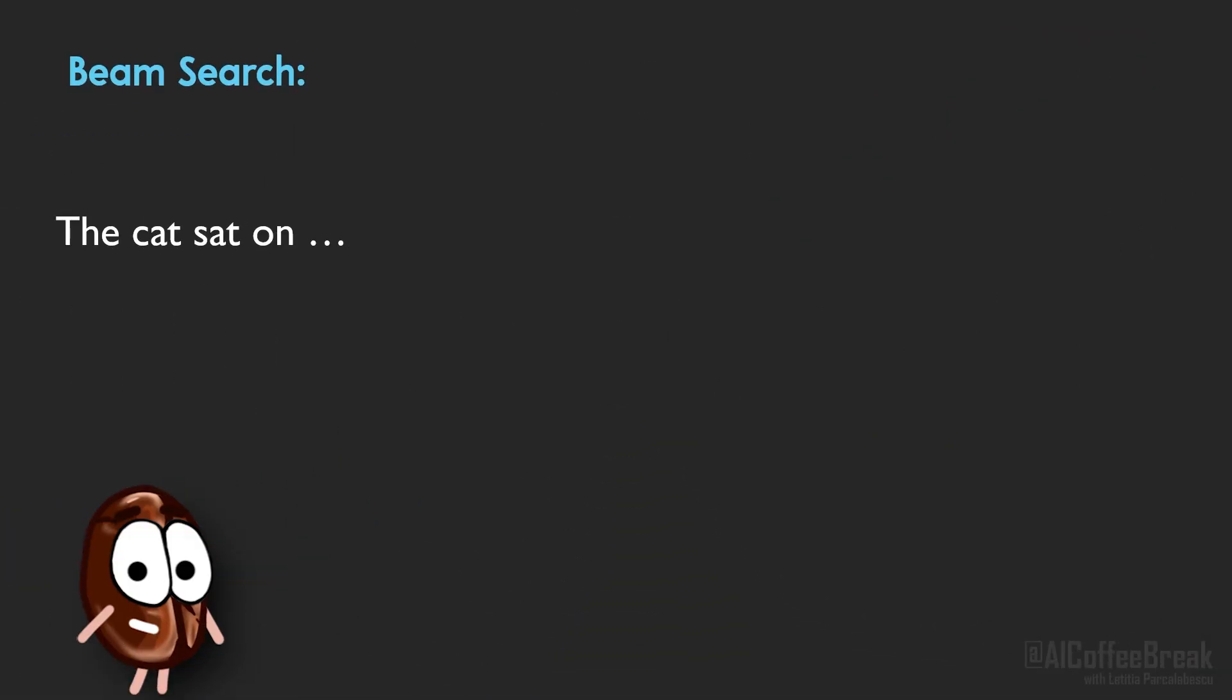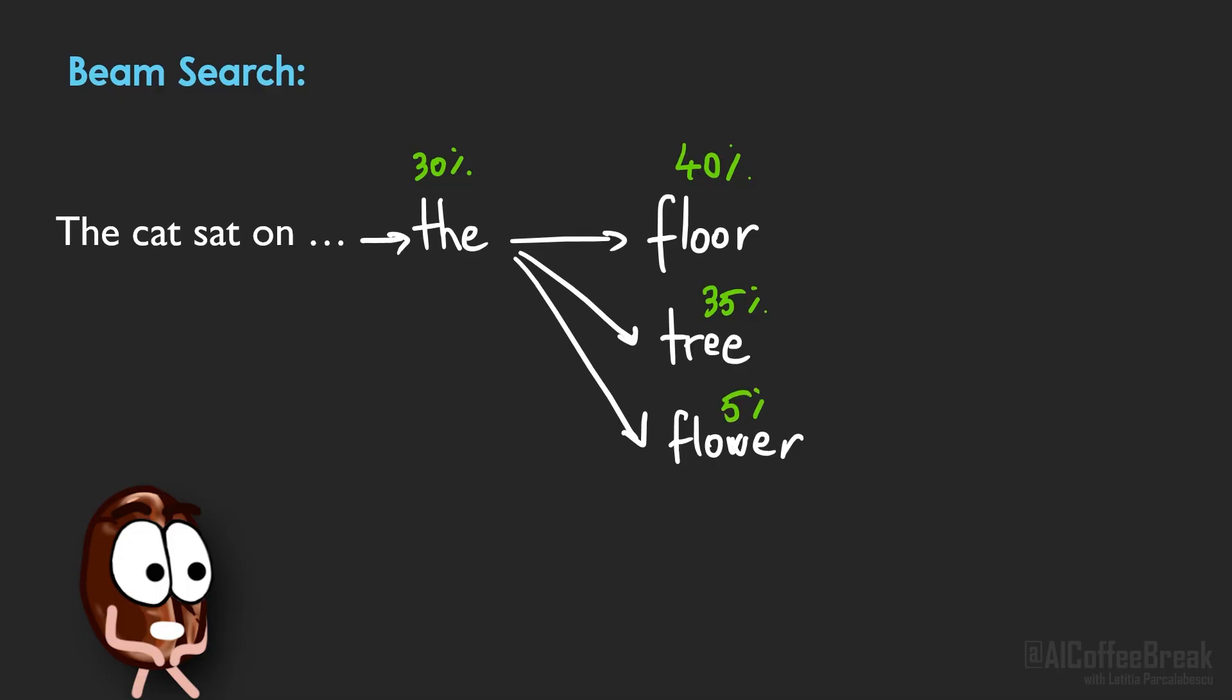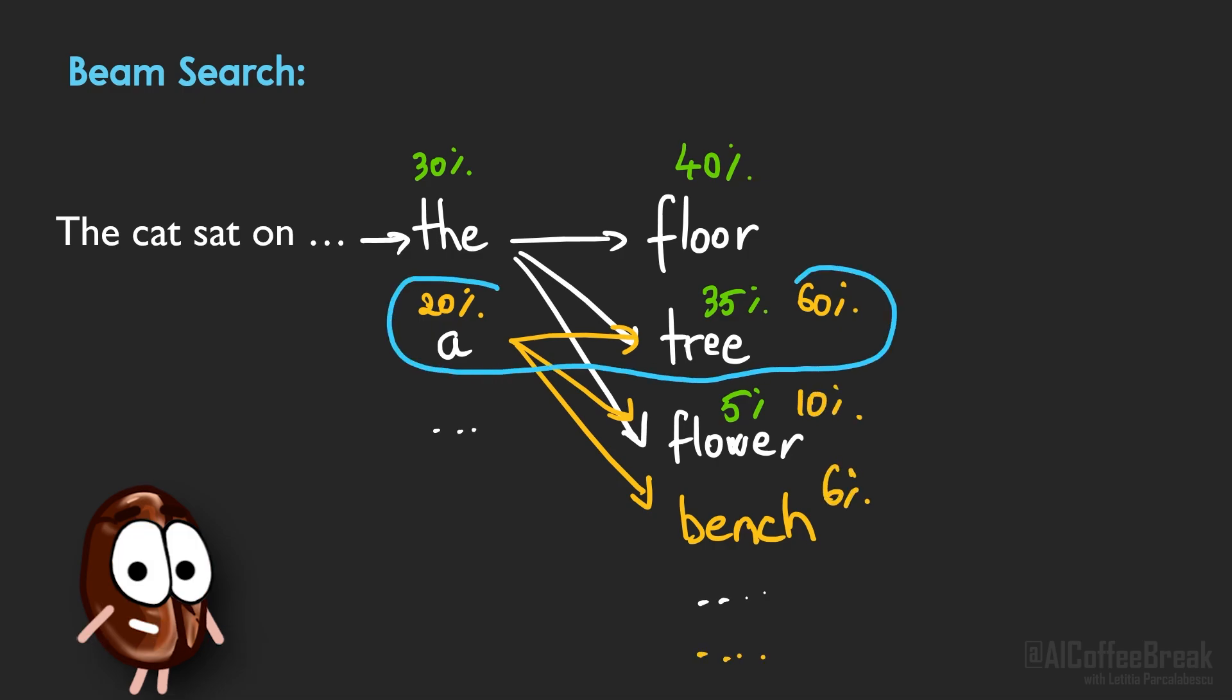Now before we wrap up the sampling methods, there's one more strategy that's often used in applications like machine translation, namely beam search. Unlike sampling, beam search is a deterministic method that keeps track of multiple promising sequences at once. You can think of it like a branching tree. At each step, instead of picking just one token, it keeps the top N sequences, called beams, and expands each of them with their most likely next tokens. And then it scores all of the candidates and keeps the best ones going. That gives you a wider view of possible continuations and helps avoiding getting stuck in a bad path early on. But it also tends to favor safe, high probability output, so it's less creative than sampling. It's mostly used when precision matters more than variety, like in translation or summarization systems.